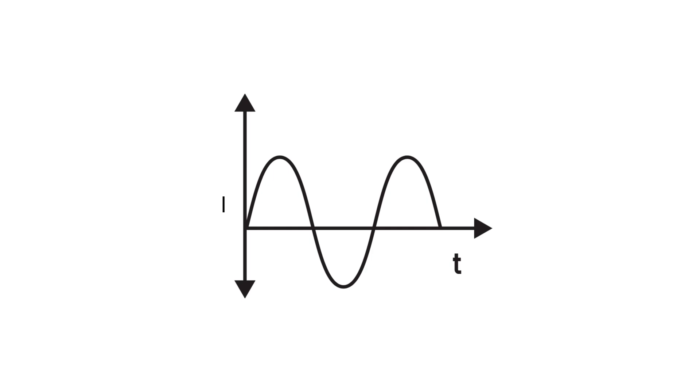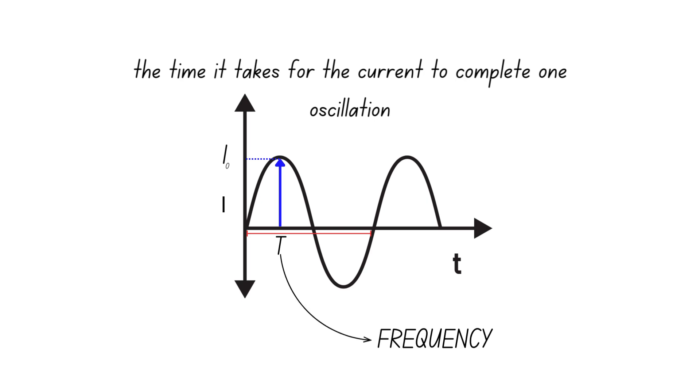Looking back at that graph for alternating current, we can see that it has a maximum value and a period which is the time it takes for the current to complete one cycle or oscillation. From the period, the frequency of AC can be deduced.